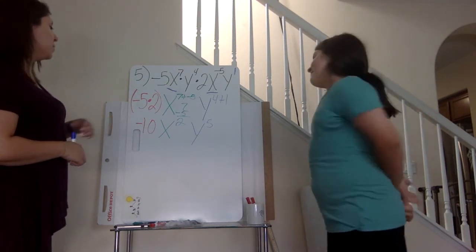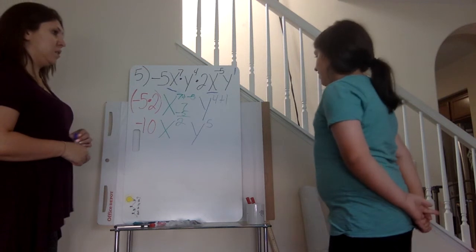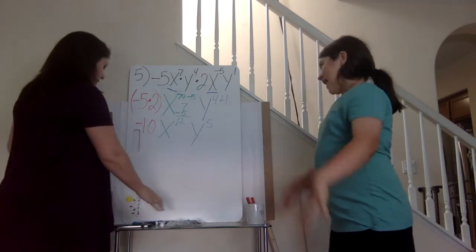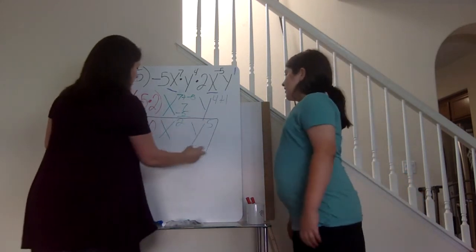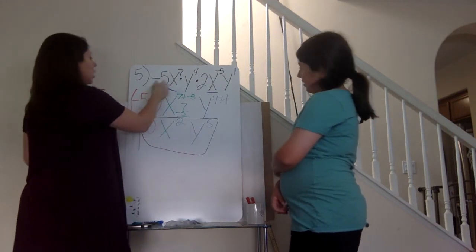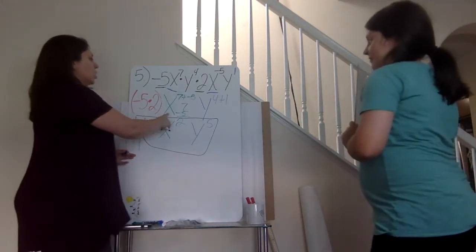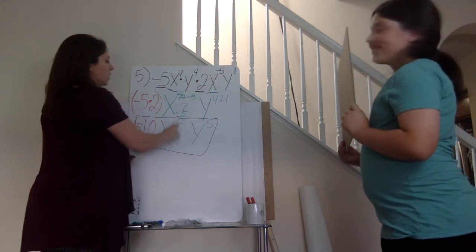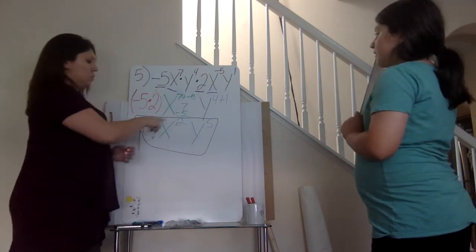Any negatives I have to deal with? Nope. What about this one? It doesn't matter — it's the base. So my final answer is going to be negative 10 x squared y to the fifth. We took our bases — negative five and two — put them together. We took x: seven minus five gives me a two. And we took four with the invisible one: four plus one is five.